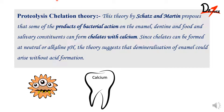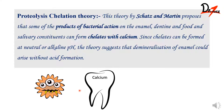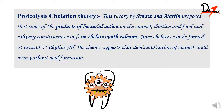Next is the proteolysis chelation theory, proposed by Schatz and Martin. They said that even without the formation of acid, there can be demineralization of the tooth. The bacteria present can act on the tooth surface — enamel, dentine, food remnants, or saliva — and form chelates. These chelates can be formed in neutral or alkaline pH, which is why demineralization of enamel can also happen without acid formation. That was the basis of the proteolysis chelation theory.